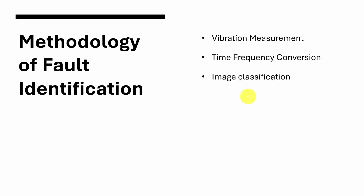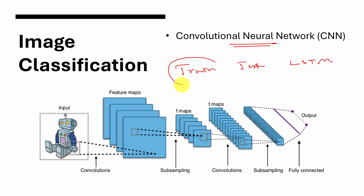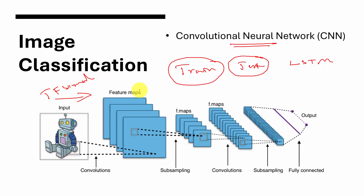The second advancement is image classification. Here, we are not going to extract features from the time-frequency domain signals — we directly classify the images. The steps are: vibration measurement, then time-frequency conversion, and the time-frequency images are directly given as input to an image classification algorithm. CNN is most commonly used in image classification. Here also you split the data into training and test sets — you need training data to confirm the effectiveness of your algorithm. The input is the time-frequency domain signal and the output is the identified fault.